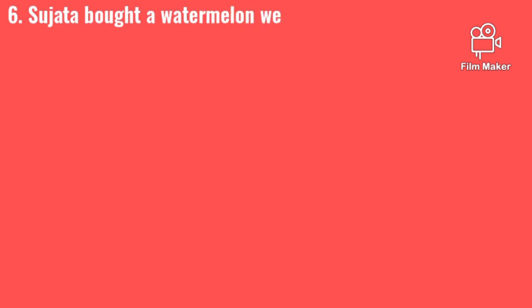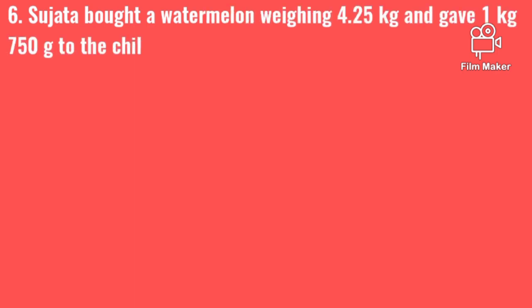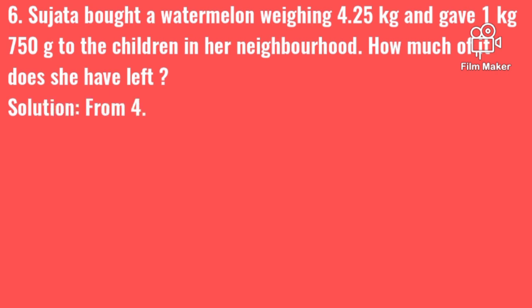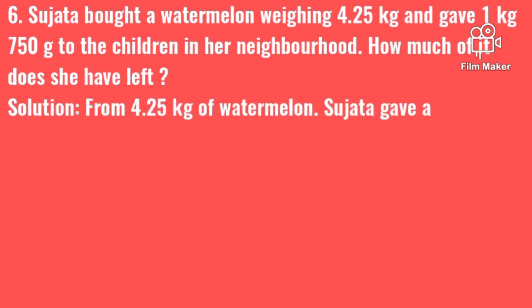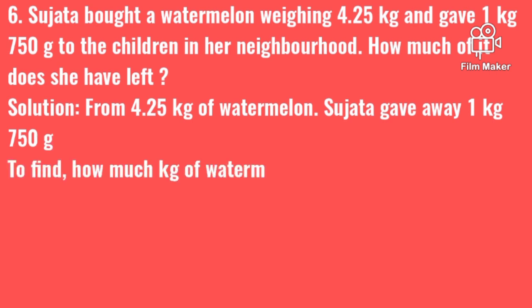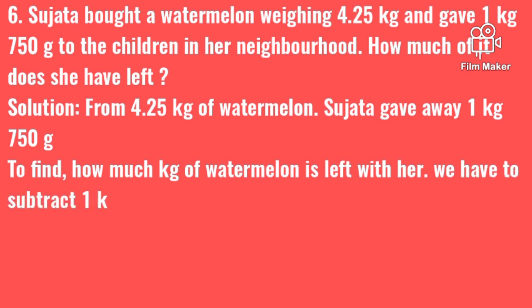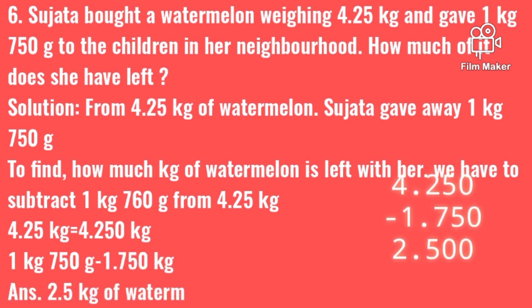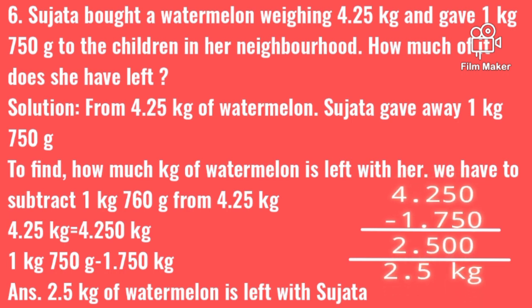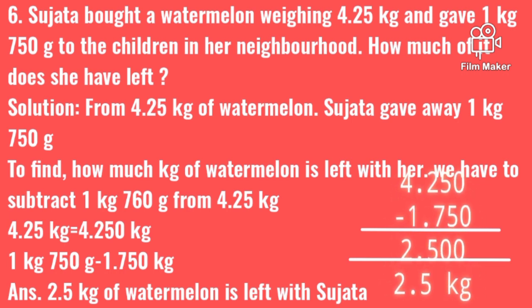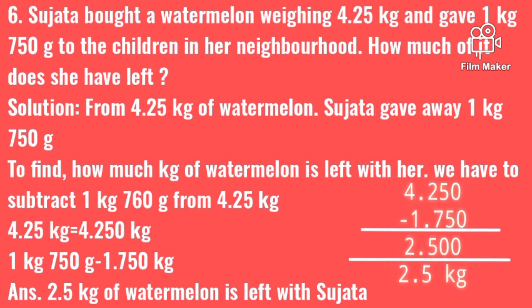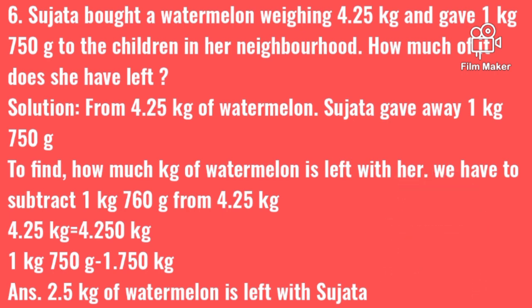Question number 6: Sujata bought a watermelon weighing 4.25 kg and gave 1 kg 750 g to children in her neighborhood. How much is left? We subtract 1.750 from 4.25 kg. The answer is 2.5 kg — that means 2 kg 500 g — is left with Sujata. When writing in decimal, we can ignore trailing zeros, but the value does not change.